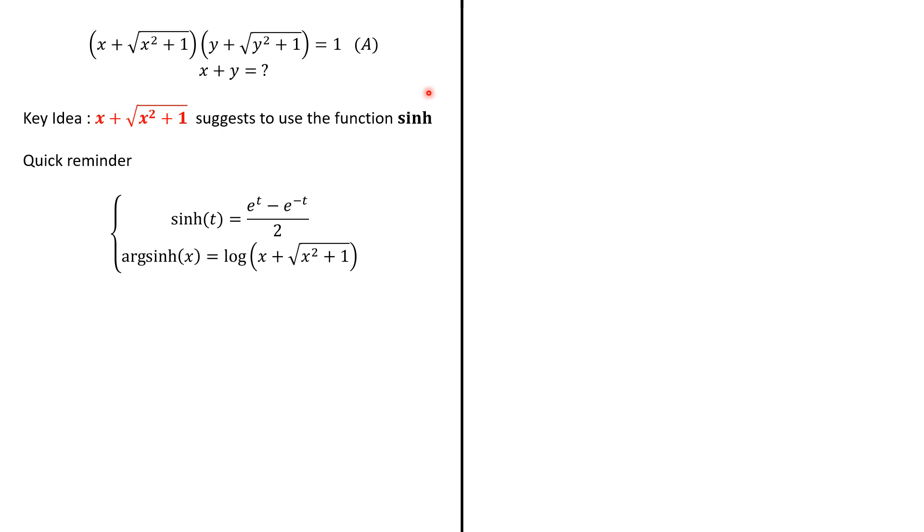Now, we propose a second method. The key idea is this: when you look at x + √(x² + 1), it suggests to use the function sinh. In case this may seem brutal for some of you, let's go through a quick reminder. We know that the sinh function is defined as sinh(t) = (e^t - e^(-t))/2 and the reciprocal, the arcsinh is defined like this.